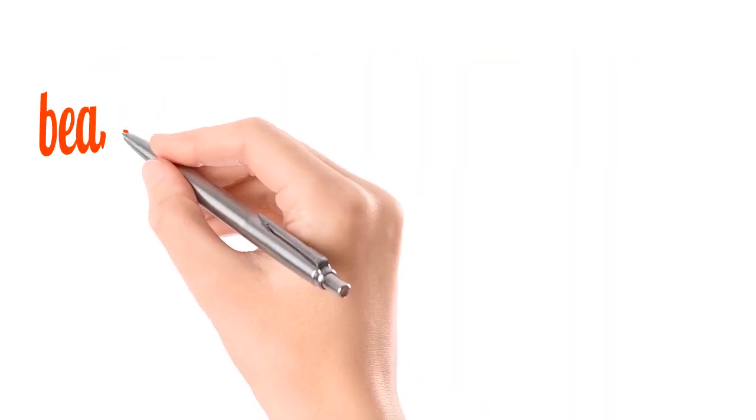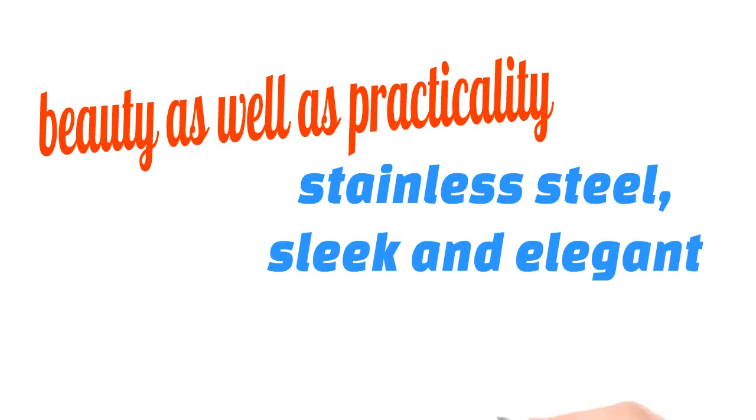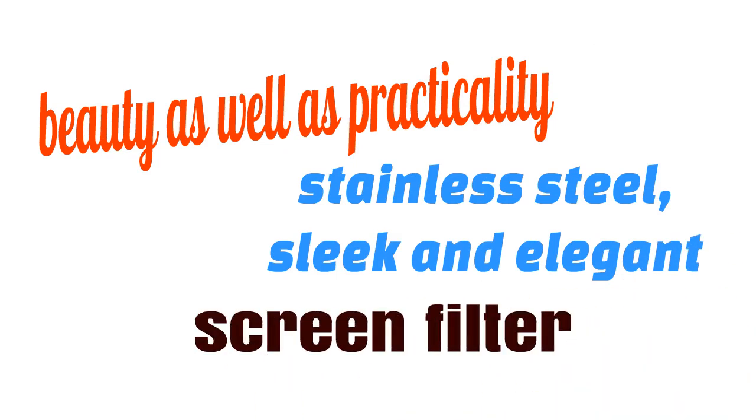Cuisinart have a distinct style. They aim for beauty as well as practicality. The Roma, all stainless steel, is sleek and elegant, yet is still down to earth enough to include a screen filter that you place in the filter itself if you want to halve the amount of coffee you're brewing.